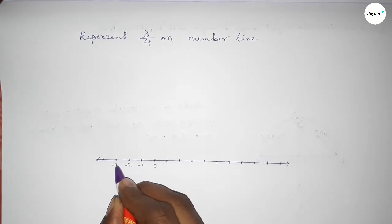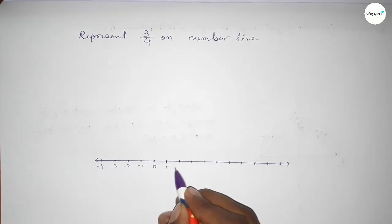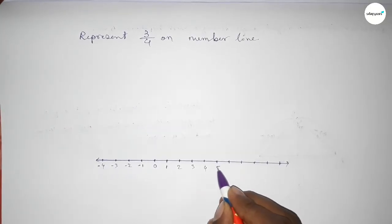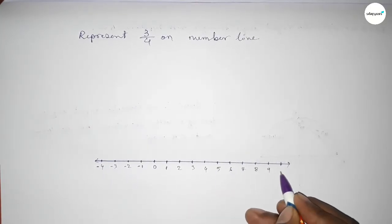Starting with number 0, this side minus 1, minus 2, minus 3, minus 4, and this side 1, 2, 3, 4, 5, 6, 7, 8, 9, 10.